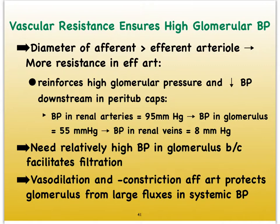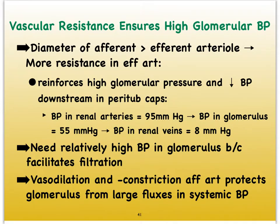If we give actual numbers to these pressures: the renal arteries tend to have a blood pressure of about 95 mmHg — compare this to the systolic pressure of the aorta at about 120 mmHg, so we've already lost some hydrostatic pressure by the time we reach the renal arteries. Blood pressure in the glomeruli is close to 55 mmHg, which is much higher than other capillary beds in the body averaging around 20 to 40 mmHg. By the time we reach the renal veins, pressure is about 8 mmHg. These significant pressure changes are all due to the anatomy of the afferent and efferent arterioles.